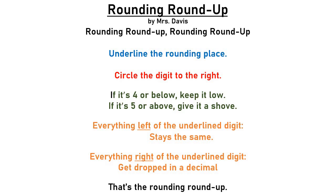So let's go ahead and sing it again — sing along, don't be shy. Rounding, round up. Rounding, round up. Underline the rounding place. Circle the digit to the right. If it's four or below, keep it low. If it's five or above, give it a shove. Rounding, round up. Everything right of the underline digit stays the same. Everything right of the underline digit gets dropped in a decimal. That's the rounding, round up.